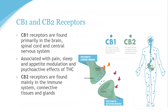CB2 receptors are mostly located throughout the immune system and related organs, as well as connective tissue and glands. They do occur in the brain, but to a lesser density than CB1. CB2 receptors have been found to be the gateway to reduction of inflammation and the repair of tissue damage. A primary distinction is that the THC molecule doesn't unlock CB2 receptors, so it doesn't allow for a psychoactive effect — this is why patients typically don't feel high when using low-THC, high-CBD strains.